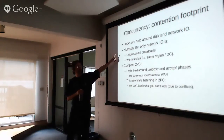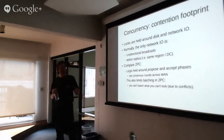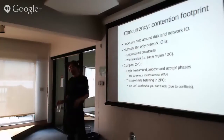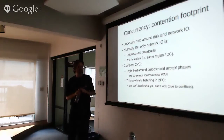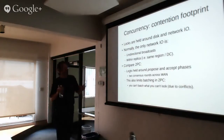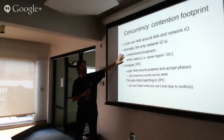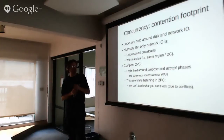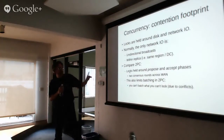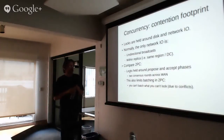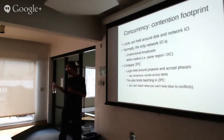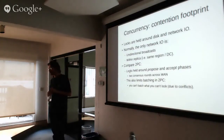How much network IO are we doing? Very little — it's going to turn out we're only doing unidirectional broadcast, not request-response, and it's typically happening within the replica. If we're lucky, we don't even have to go outside the local replica for the readcaster. Compare that with two-phase commit: both the proposal phase and the acceptance phase of the transaction happen within the context of locks, and those two phases involve two consensus rounds across the whole network, which may be quite high latency.